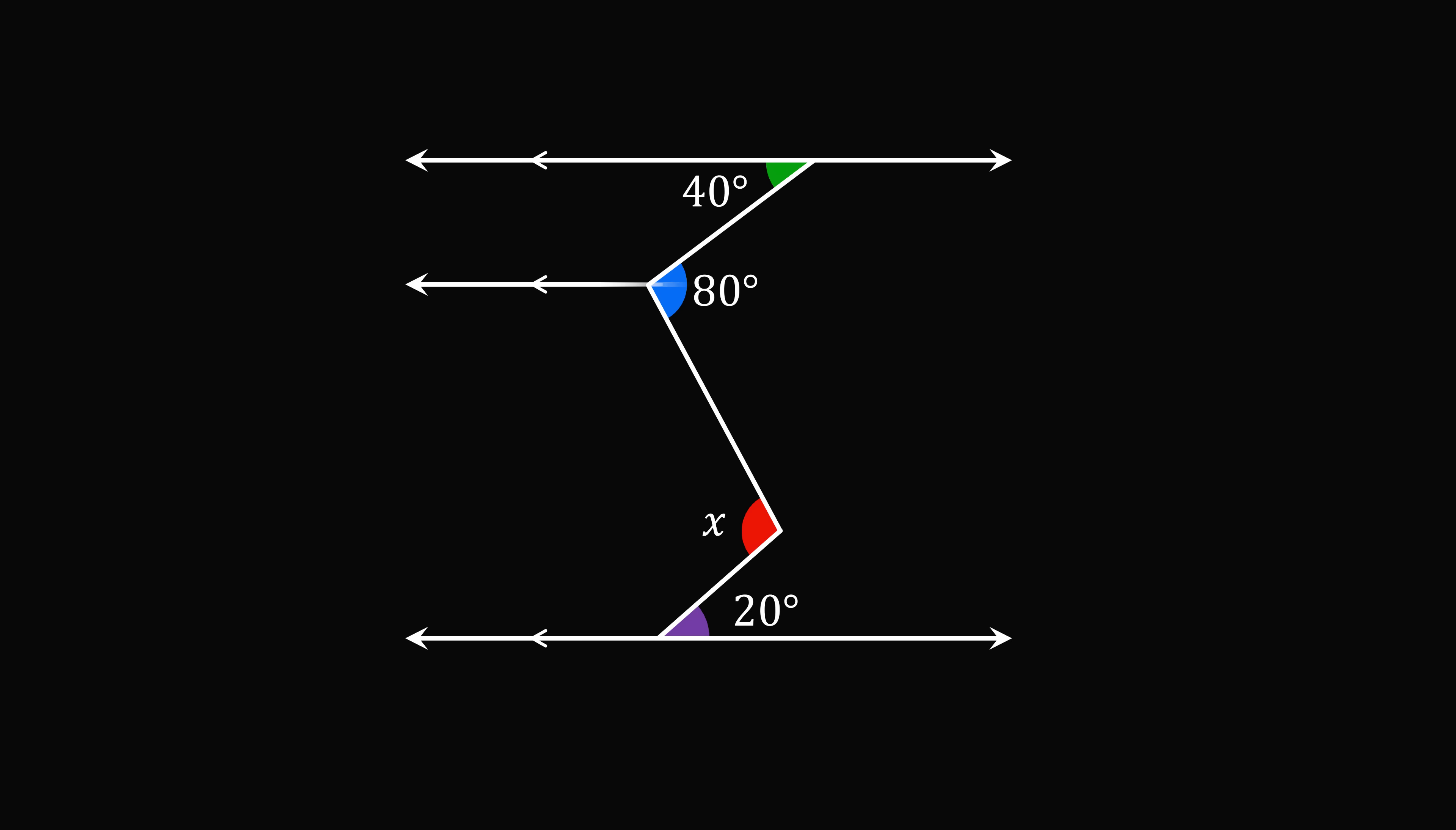So construct one parallel line through the vertex of 80 degrees, and construct another parallel line through the vertex of x degrees. Now we have transversals going through parallel lines. So alternate interior angles are equal to each other.